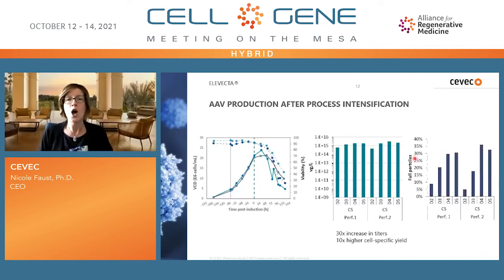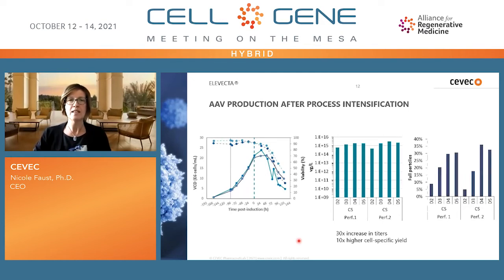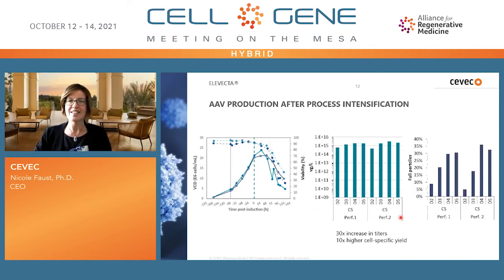One of the advantages of a fully stable cell line is that you can do process intensification — and that's what we did as the next step. We looked at a perfusion process using ATF perfusion, and to our surprise, we found that productivity was not just maintained at higher cell densities but actually increased. Working with four times higher cell densities, we still saw a 30-fold increase in titers, reaching up to 3×10^15 VG per liter — about 10-fold higher cell-specific productivity. Additionally, the percentage of full particles increased: in two independent perfusion runs, we ended up with 30 to 40% full viral particles in crude harvest, with no enrichment or purification at that stage.